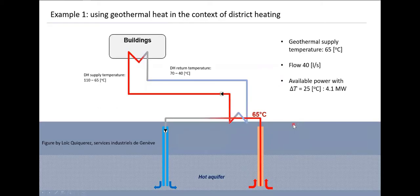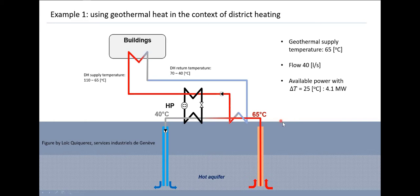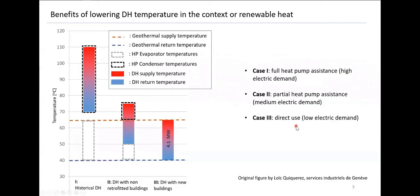We suppose here that we have a geothermal resource with a temperature level of 65 degrees and a flow rate of 40 liters per second. If we are able to achieve a delta T of 25 degrees — meaning we re-inject the water at 40 degrees — this will lead to a thermal power of 4.1 megawatt. Depending on the operating levels of the district heating, we may require assistance from a heat pump.